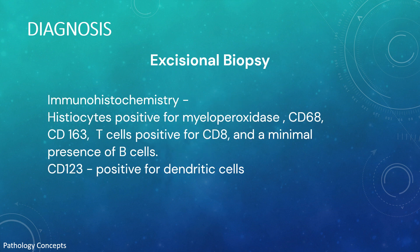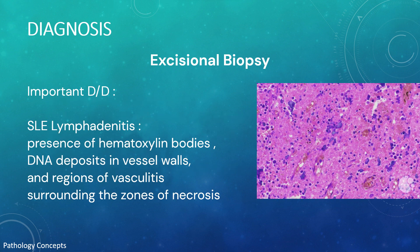Immunohistochemistry demonstrates histiocytes positive for myeloperoxidase, CD68, and CD163; T cells show positivity for CD8 and CD4, with minimal presence of B cells. The presence of hematoxylin bodies, DNA deposits in vessel walls, and regions of vasculitis surrounding a zone of necrosis is seen in SLE lymphadenitis, which aids in its distinction from KFD.